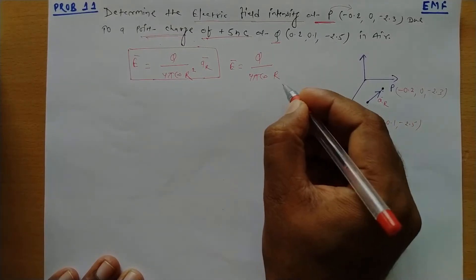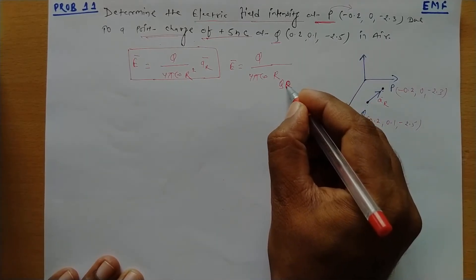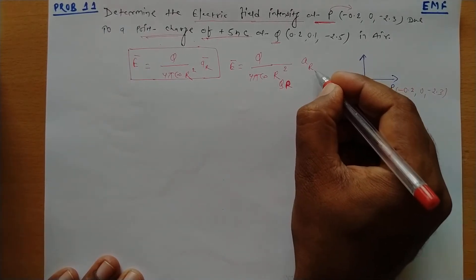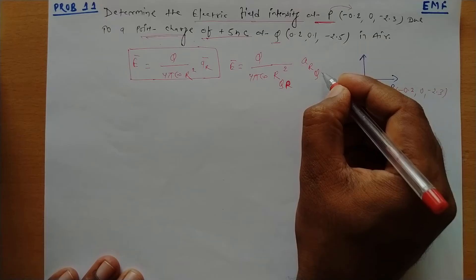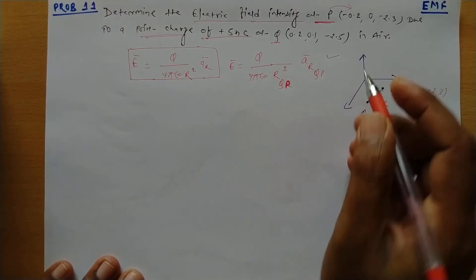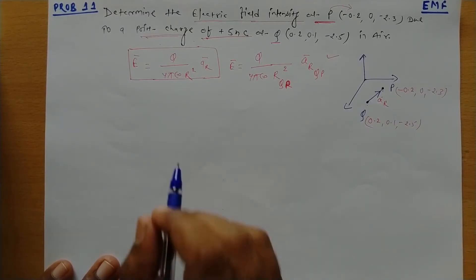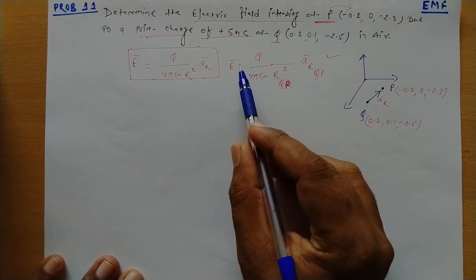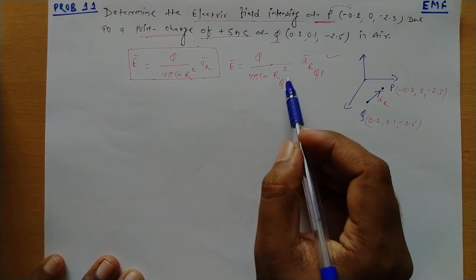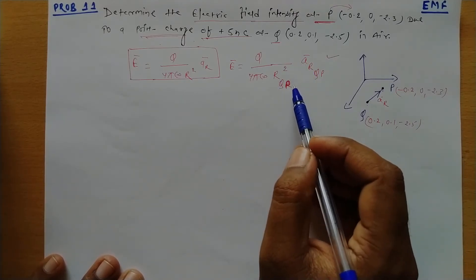So we write this as R_QP, and the direction will be from Q towards P. So we have R_QP squared and the unit vector will be from Q to P. By using this expression we can find the electric field intensity. Now we will put the values. To solve this expression, we need to find the values of the unit vector and the distance vector R_QP.